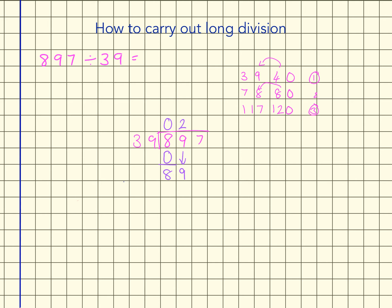You can see that's two groups because two groups is, sorry, 78. And if I subtract 78 I get a 1 and a 1 and then I can bring down 7.